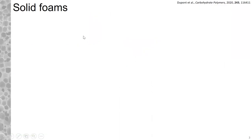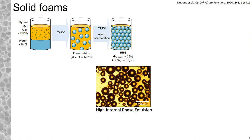The first type of material we succeeded in synthesizing were solid foams. Regarding the process, we dispersed the hydrophobic CNCs into an organic medium containing the monomers styrene and divinylbenzene, and we dispersed water inside by mixing, obtaining an inverted emulsion with water droplets inside the organic medium. To obtain solid foam, we had to increase the water content above 64% to obtain a high internal phase emulsion, called HIPE.